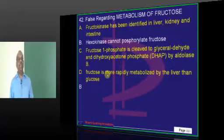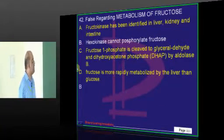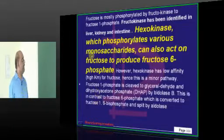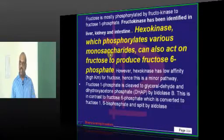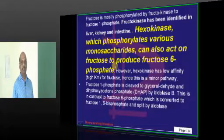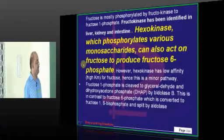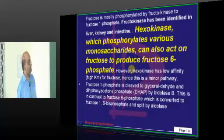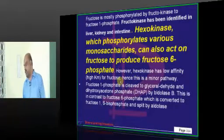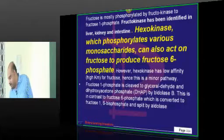Now coming to fructose. What is the importance of hexokinase? Hexokinase is more generic. It can be able to phosphorylate any monosaccharide. It can act on fructose to produce fructose-6-phosphate.